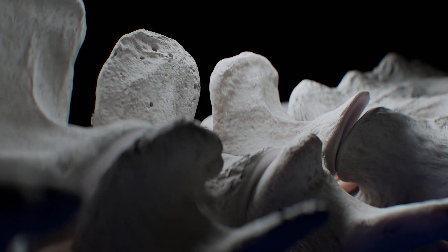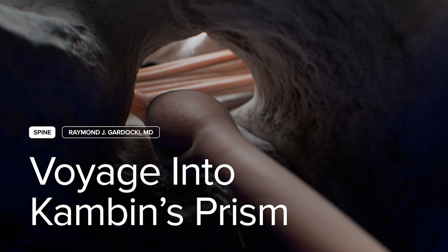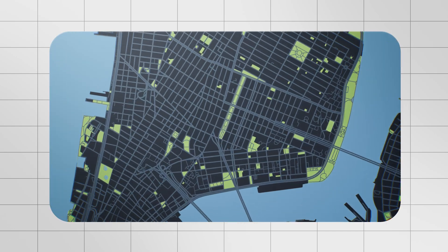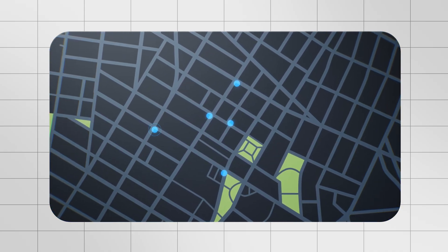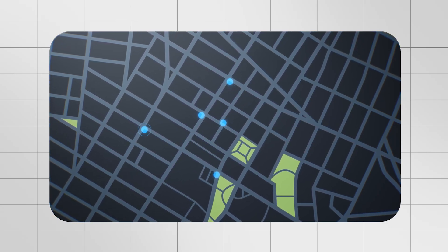We'll explore Kambin's prism at L4-5 and the surrounding anatomical structures. Just as technology has revolutionized how we navigate our world, it's also revolutionizing the way we understand anatomy. A traditional surgeon performing open procedures can use all the exposed landmarks to identify their location. Imagine using a map to navigate a city — if you don't know where you are, you start with a wide overview of the entire city, then zoom into your specific focal point.